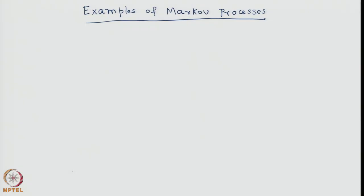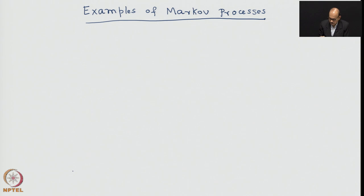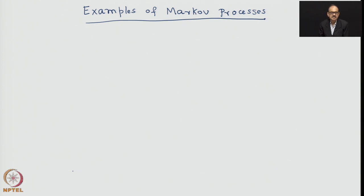Let us continue with some examples for Markov processes. To start with, let us take up an example of the fluctuating bank balance of an individual. Even for people with fixed salaries, there is some level of fluctuations in the bank balance. This fluctuation is much more so for people who do not have fixed salaries — self-employed people.